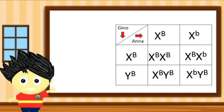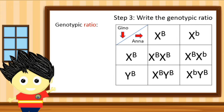Step 3: we need to identify the genotypic ratio. The genotypic ratio is based on the result of the Punnett Square.